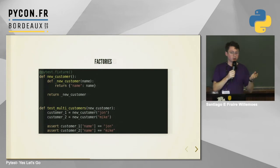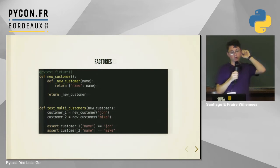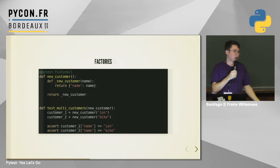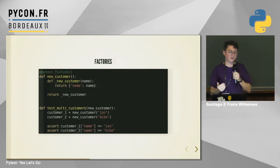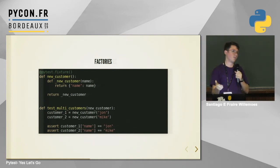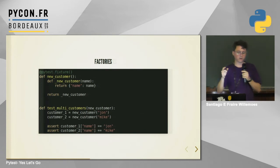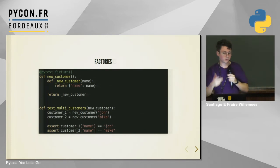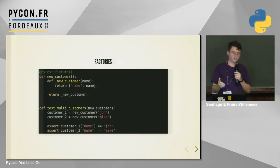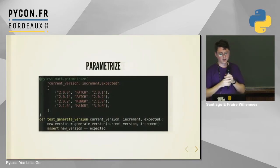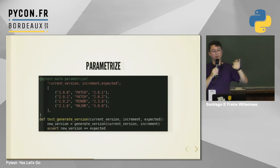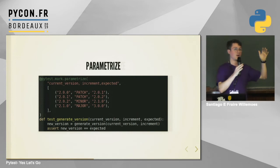Fixtures can also be used as factories. You declare a function inside the fixture function, and when you return that inner function, PyTest executes the fixture. The result will be a function, so when you call it you can use it as a factory. In this case, I'm creating two new customers — John and Mike — and comparing them.